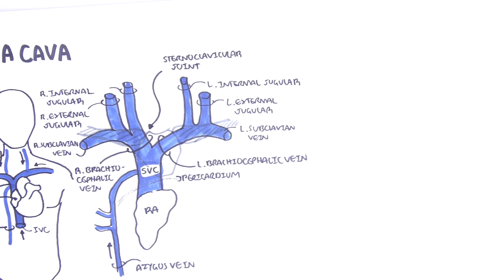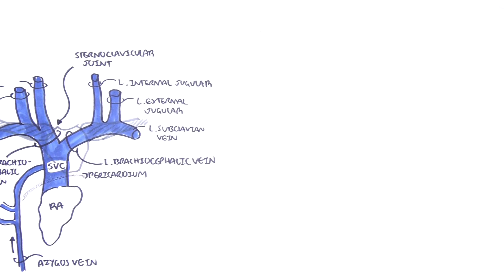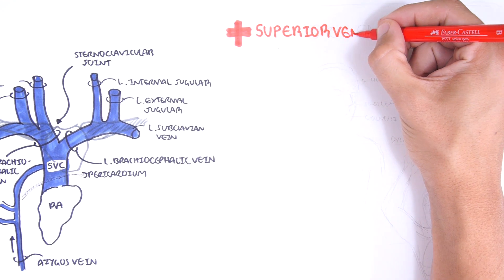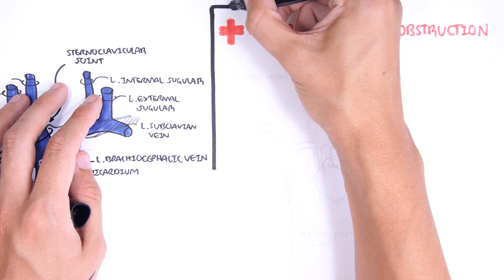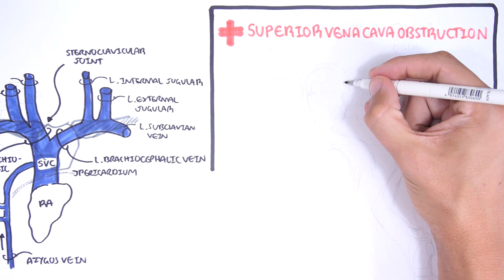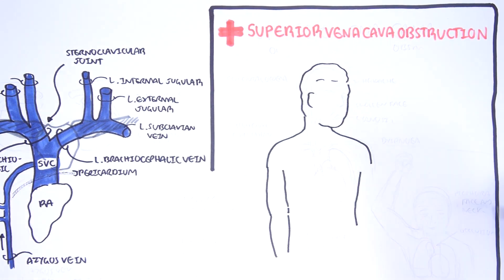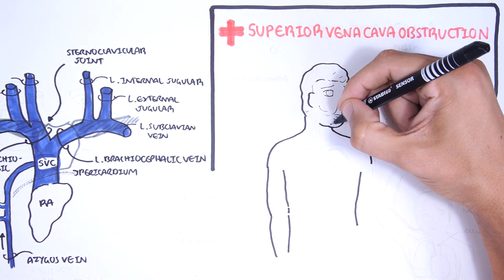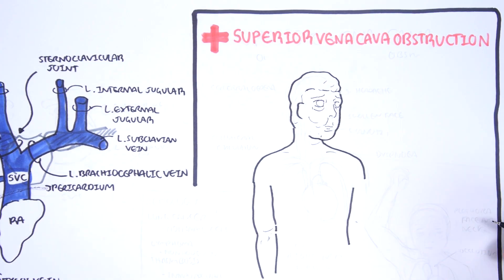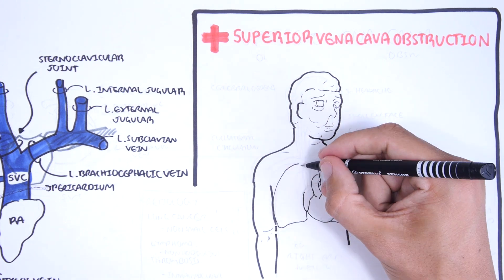The clinical anatomy to consider surrounding the superior vena cava is the superior vena cava obstruction. Patients with an obstructed superior vena cava are unable to drain blood efficiently from the upper limbs, neck, and face into the heart.